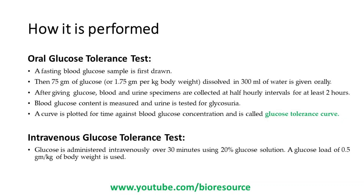For oral glucose tolerance test, initially a fasting blood glucose sample is collected, and then 75 grams of glucose dissolved in 300 ml of water is given orally. After giving glucose, blood and urine specimens are collected at half-hourly intervals for at least two hours. The blood glucose content is measured and urine is tested for glycosuria. The resulting data points are plotted against the blood glucose concentration, and this type of curve is called the glucose tolerance curve.